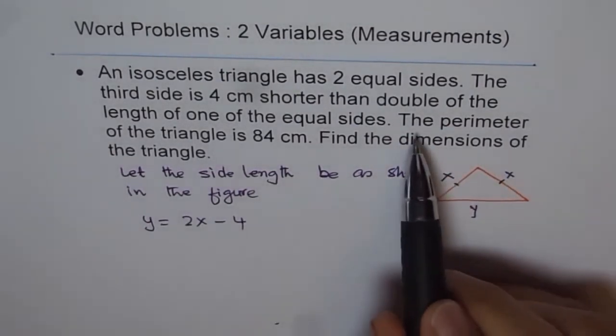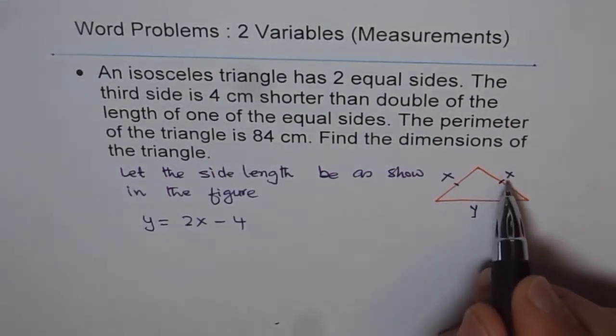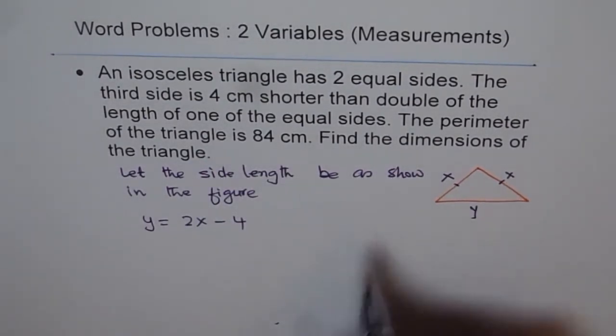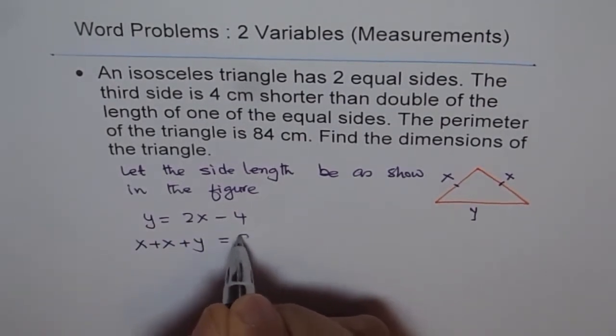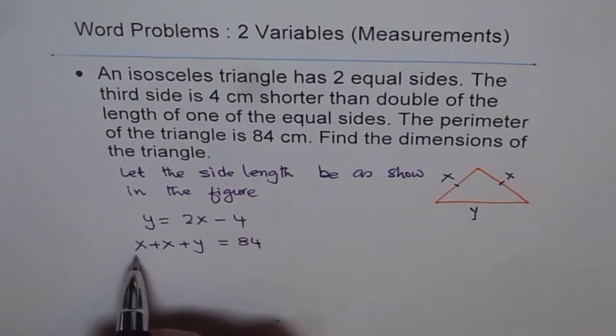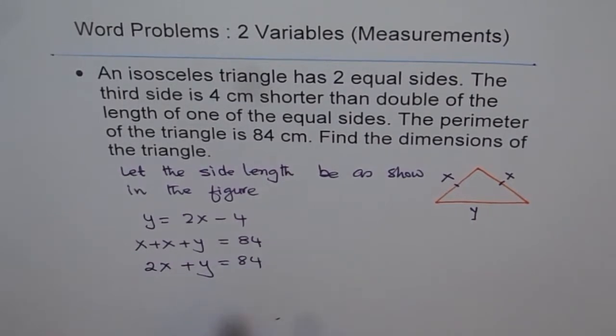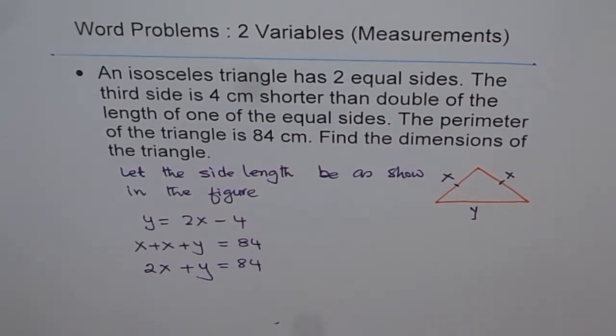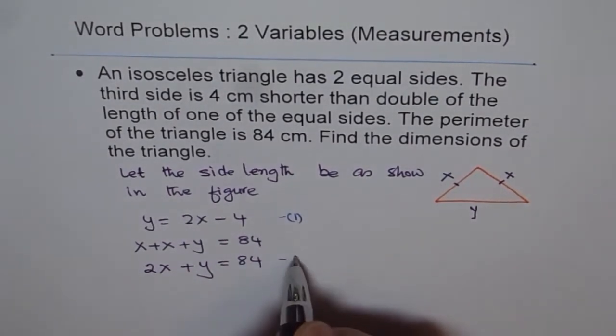The next statement is the perimeter of the triangle is 84. That means x plus x plus y equals 84. So we got two equations and two variables, which we can easily solve. The second equation can be written as 2x plus y equals 84. Let's number them: this is equation 1, and this is equation 2.